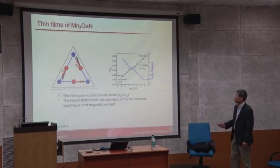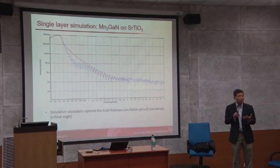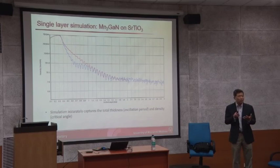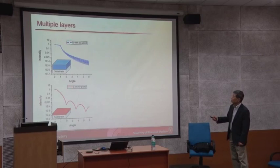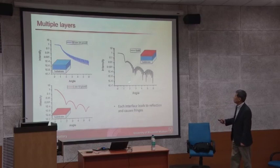As long as the film is smooth, you can see the oscillation and get the interfacial roughness, surface roughness, and thickness. For example, we were trying to grow magnesium, manganese, gallium nitride, and strontium titanate. The simulation gives not only total thickness and density, but also allows simulating multiple layers. For 5 nm thickness, the periodicity is quite long. For 50 nm, the periodicity is very small. When you have double layers, you get a superimposed oscillation — one oscillation from the thin region and one from the combined thickness.